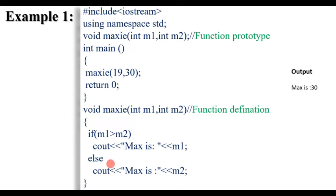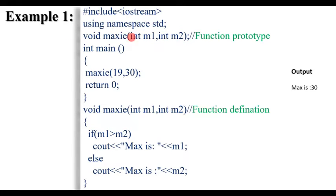This is the first program example. The name of the function is maxi, and the return type is void. There are two integer arguments. This semicolon here is the declaration of the function — the prototype.